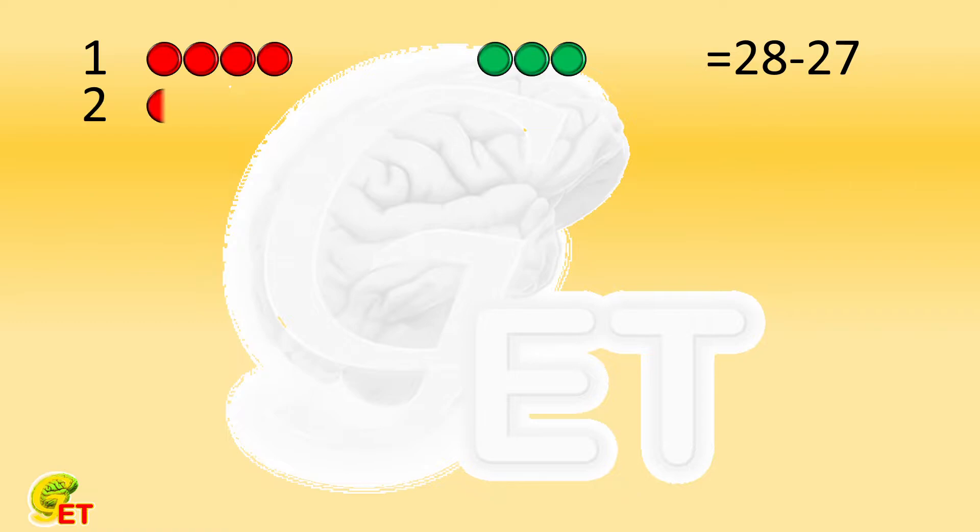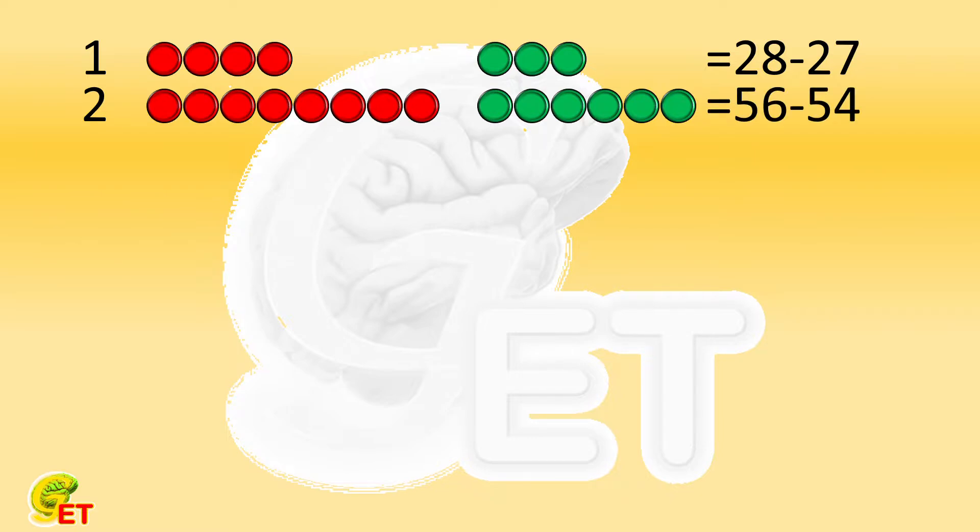For the second floor, we first press the red button for 8 times, then press the green button for 6 times. 56 minus 54 equals 2.